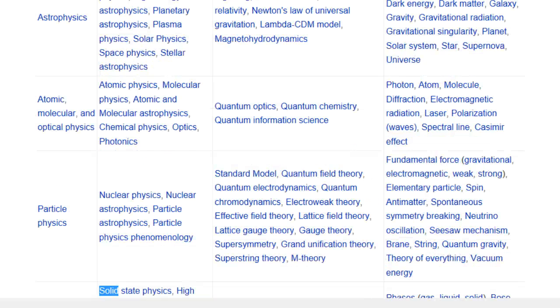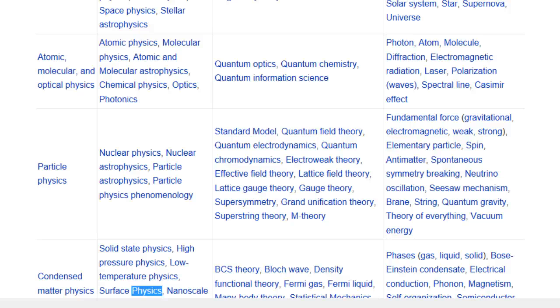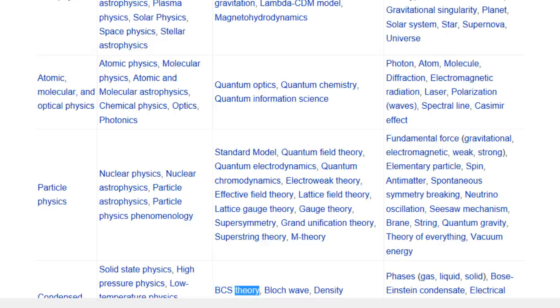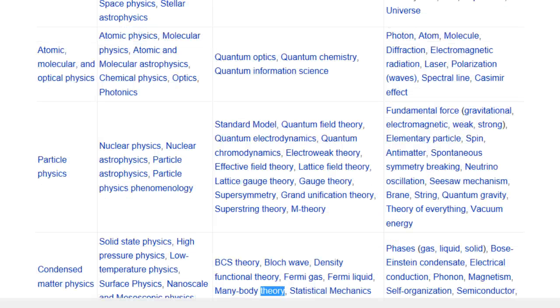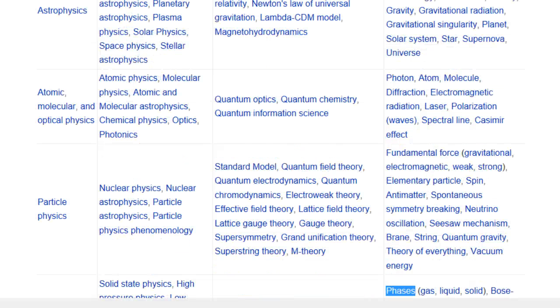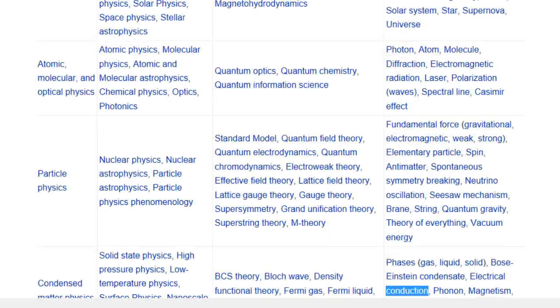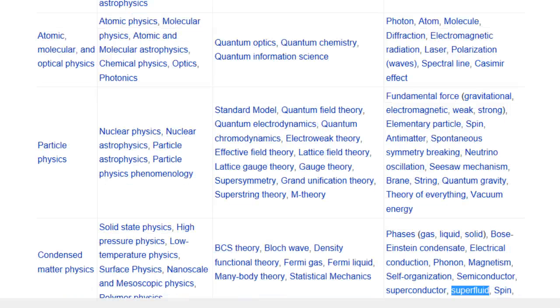Condensed Matter Physics: Solid State Physics, High Pressure Physics, Low Temperature Physics, Surface Physics, Nanoscale and Mesoscopic Physics, Polymer Physics. BCS Theory, Bloch Wave, Density Functional Theory, Fermi Gas, Fermi Liquid, Many Body Theory, Statistical Mechanics. Phases: Gas, Liquid, Solid, Bose-Einstein Condensate, Electrical Conduction, Phonon, Magnetism, Self-Organization, Semiconductor, Superconductor, Superfluid, Spin.